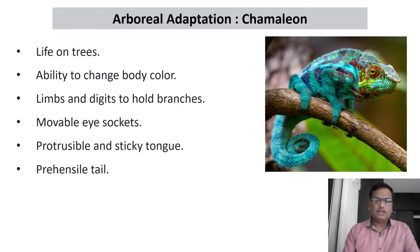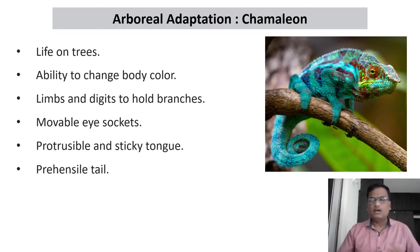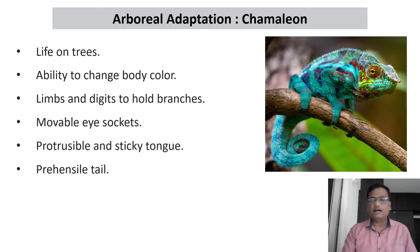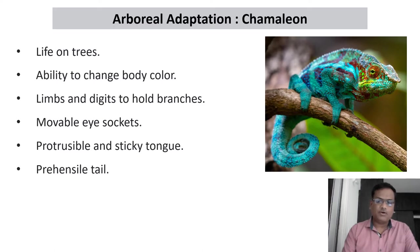The animals normally move from one plant to the other or from one branch to another, so they have the mechanism to stay firmly on the branch or move from one tree to the other. Here we have taken the example of chameleon, which is well suited for life on the trees. What are the adaptations in chameleon which help it to survive on the tree?